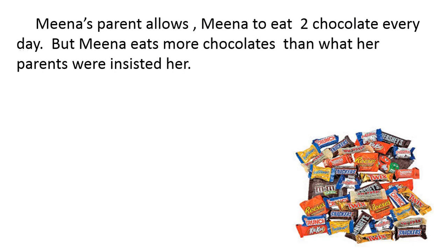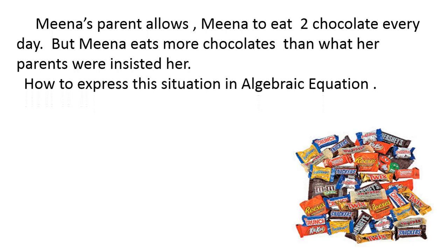Let's see an example. Meena's parents allow Meena to eat two chocolates every day, but Meena eats more chocolates than what her parents insisted. So how to express this in an algebraic equation? Parents allowed two chocolates to eat, but she's eating more than two. We don't know how much she will eat, whether one, two, three, or four extra. To represent those extra chocolates we write a variable. So two is constant and c is variable: 2 + c. That c value will be changing.